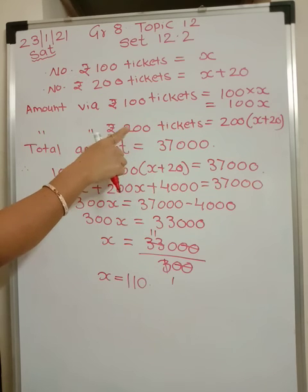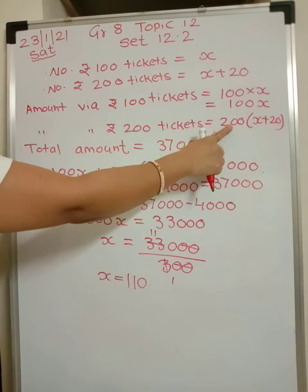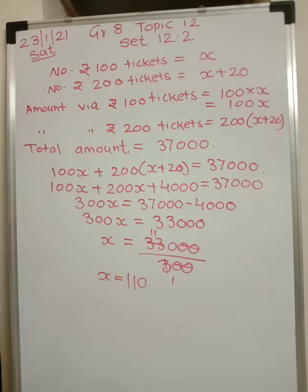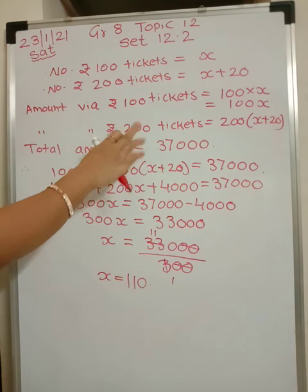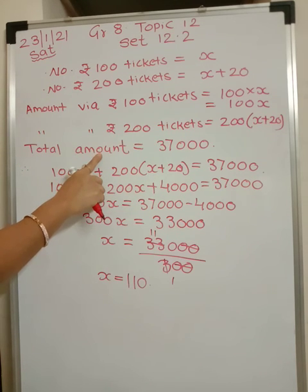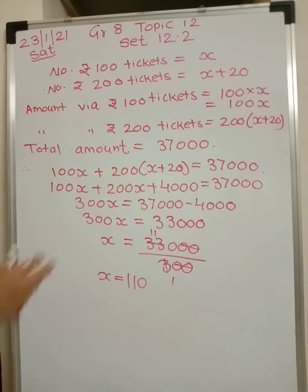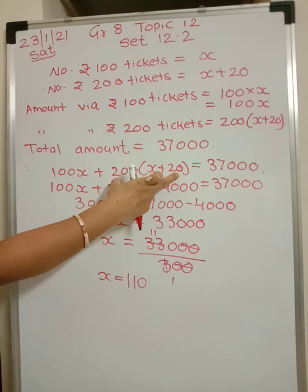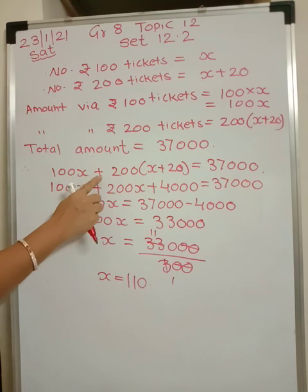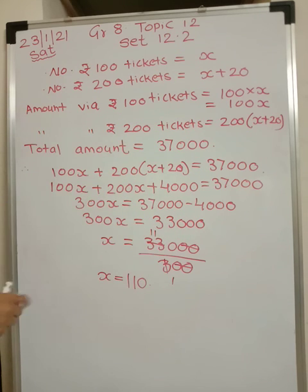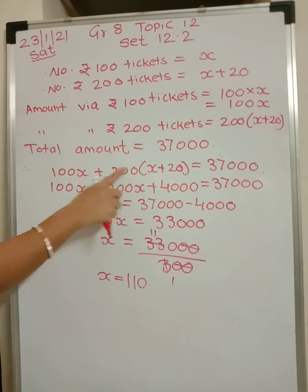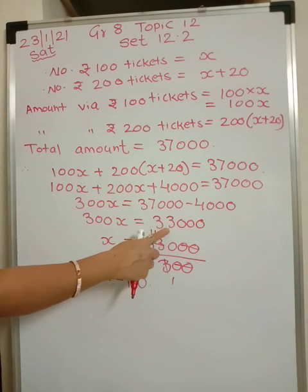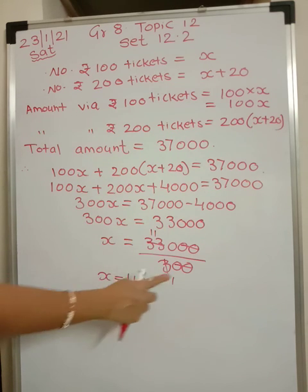The amount received from Rs.200 tickets is 200 into (x plus 20). Total amount from selling both types of tickets was Rs.37,000. Opening brackets: 100x plus 200x plus 4,000 equals 37,000. So 300x equals 33,000, and x equals 33,000 divided by 300.